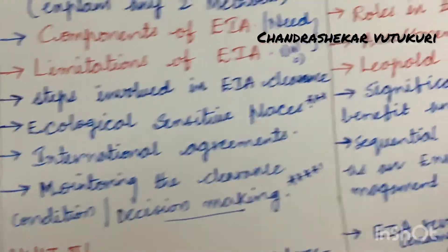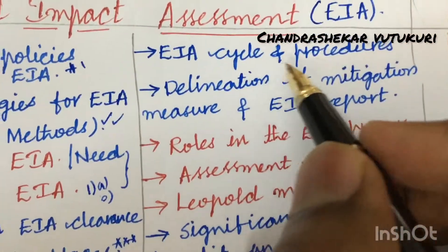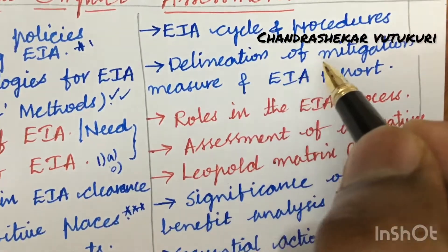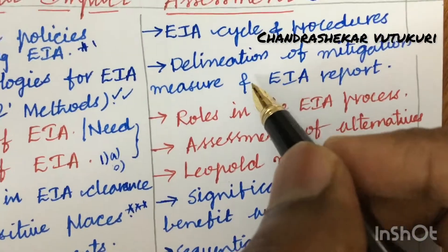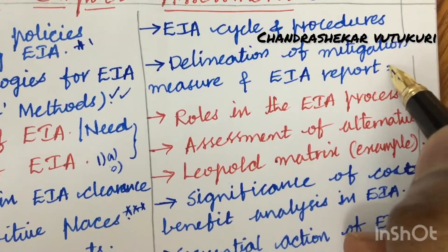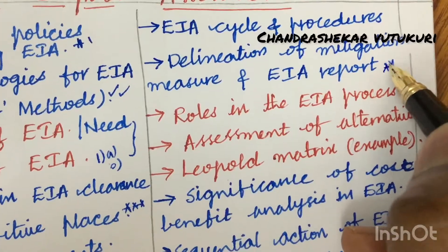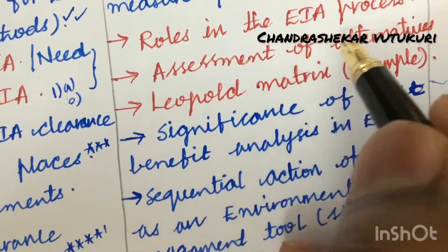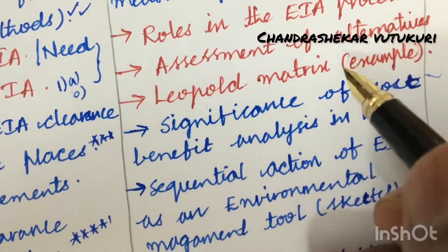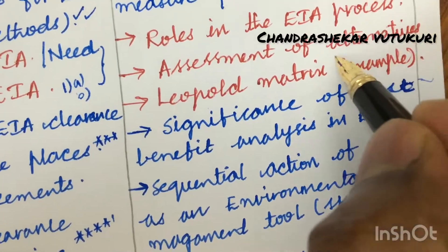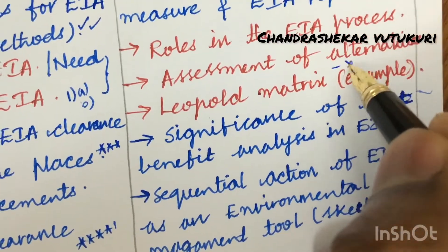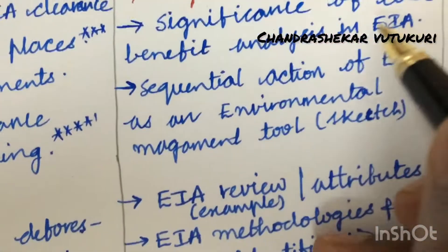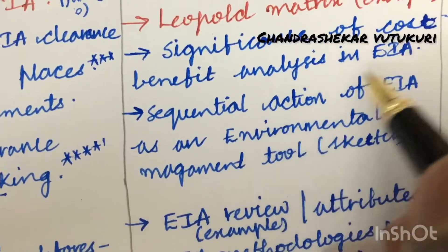The EIA cycle and procedures, delineation of mitigation measures, and EIA report are said to be very important gunshot questions for this time. The roles in the EIA process and assessment of alternatives may also be among the top gunshot questions.